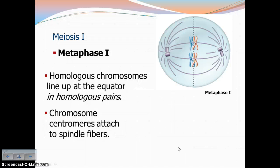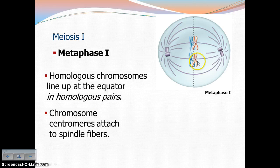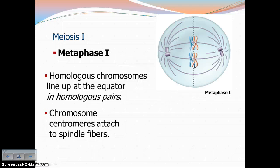In metaphase I — 'meta' means middle — the chromosomes are lining up in the middle, but the difference is that they're lining up in pairs in metaphase I. Homologous chromosomes are lining up in pairs in metaphase I. The spindle fibers are attaching to the centromere, pushing them to the middle of the cell, but they're still in that tetrad form. They've just crossed over so they're still holding hands. They are lined up in homologous pairs — and that's key here.